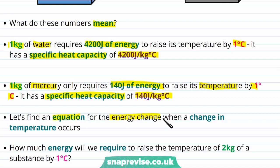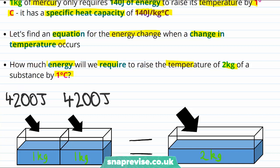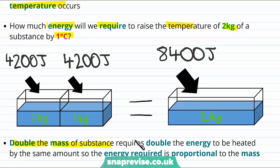Let's find an equation for the energy change when a temperature change occurs. We need to find out how the energy required depends on the mass of the substance we're trying to heat. If we heat one kilogram of water and then another kilogram of water, we would expect twice the energy to heat all the water by one degree centigrade — that's 8400 joules for two kilograms. So doubling the mass means double the energy: the energy required is proportional to the mass.